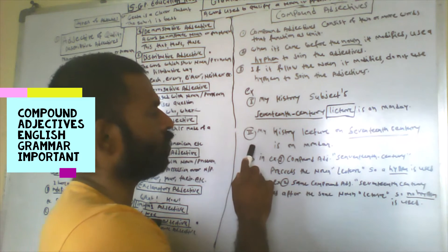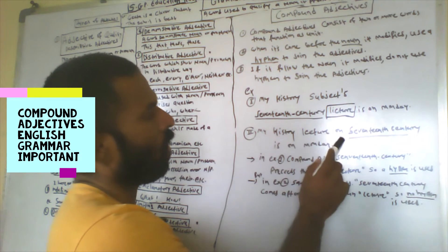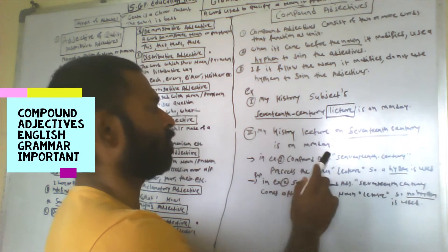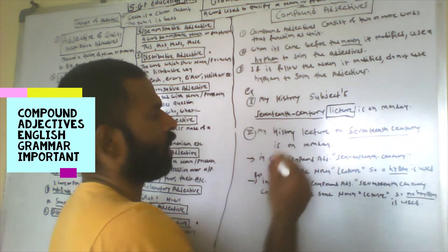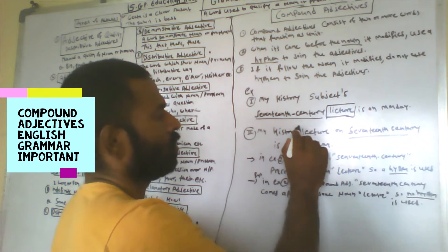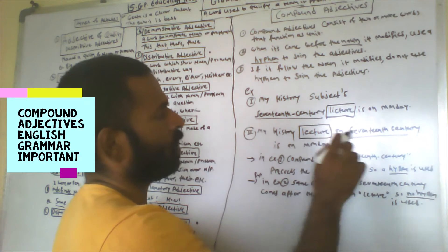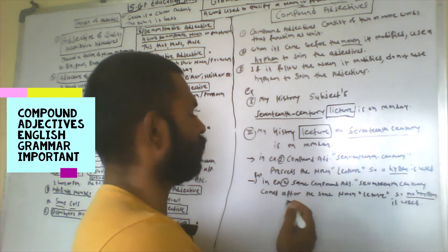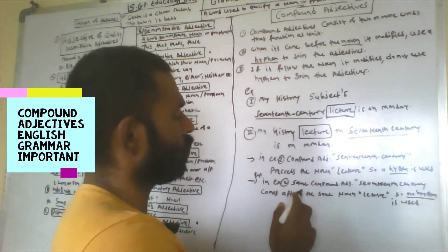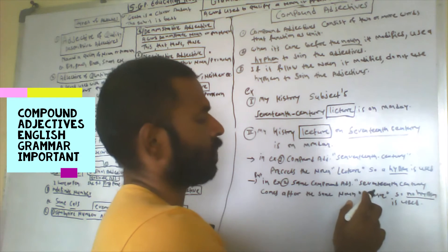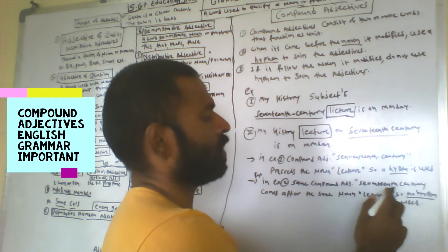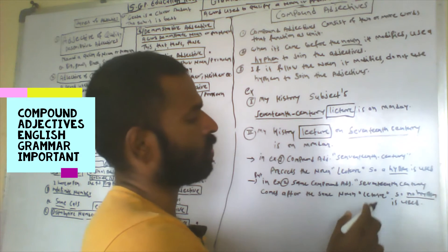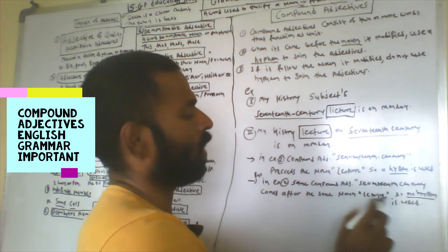In example number two: 'My history lecture on 17th century is on Monday.' Here, 'lecture' — the noun — comes before the adjective. The adjective comes after the noun, so the same compound adjective '17th century' comes after the noun 'lecture,' and no hyphen is used.